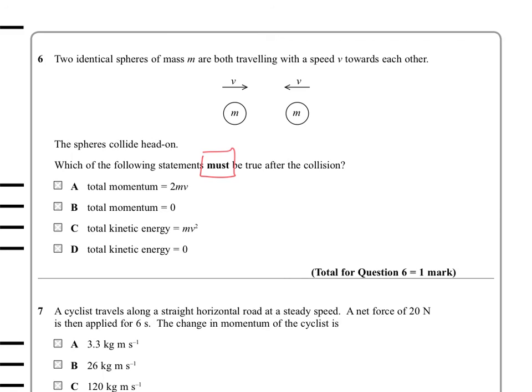Now if we recognize the fact that momentum is a vector, then we will realize that the first answer of 2MV can't be true because these momentum values are equal and opposite. Total momentum equal to 0 will be true because total momentum before the collision was 0.